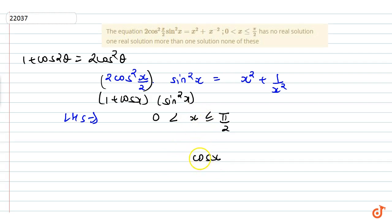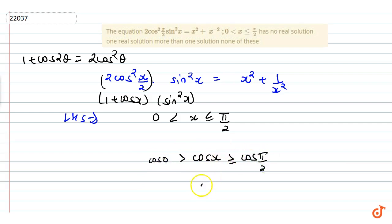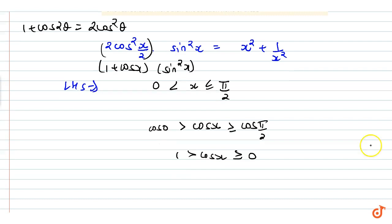Because cosine is a decreasing function, we consider its range. Looking at cos(0) and cos(π/2), when x varies, the value of cosx ranges greater than or equal to 0 (with cos value at 0) and less than 1.